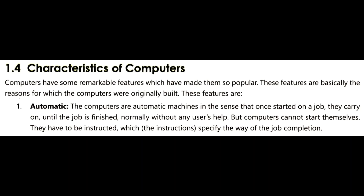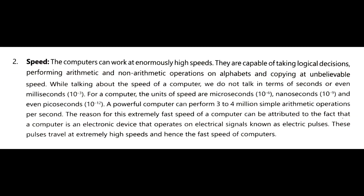Now we are going to discuss some characteristics of computers. The first one is automatic. When we assign a particular job or multiple jobs to a computer system, it starts working and automatically stops when the job is done, without the help of any user. But before assigning a job, we need to start the computer system. Now, speed: a computer system can process any information at enormous high speed and is capable of taking logical decisions and performing arithmetic and non-arithmetic operations. A powerful computer system can perform 3 to 4 million arithmetic operations within a second.